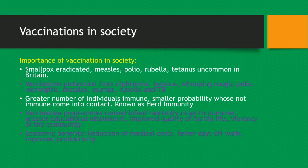Moving on to vaccinations. The importance of vaccination in society is that it has eradicated diseases such as smallpox, measles, polio, rubella and tetanus, which are now uncommon in Britain. Vaccination gives protection from diphtheria, tetanus, whooping cough, polio, meningitis, measles, rubella and TB. The greater number of individuals that are immune means there is a smaller probability that those who are not immune will come into contact with the disease — this is known as herd immunity. Vaccination programmes have caused infant mortality rates to plummet, leading to greater educational attainment and improved quality of family life. Economic benefits include a reduction in medical costs and fewer days off work, meaning improved productivity.